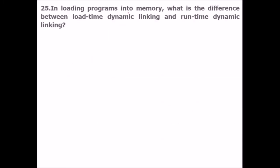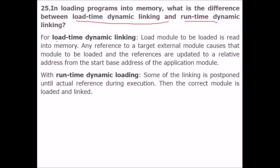What is the difference between load-time dynamic linking and run-time dynamic linking? In load-time dynamic linking, the load module is read into memory first, and any reference to an external module causes that module to be loaded, with addresses resolved relative to the base address of the application. In run-time dynamic linking, some linking is postponed until an actual reference is made during execution, and the required module is loaded and linked at that point.